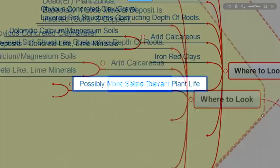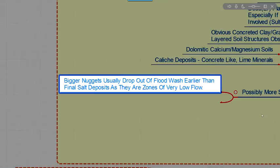Possibly more saline tolerant plant life. Bigger nuggets will usually drop out of a flood wash earlier than the final salt deposits. As I spoke of earlier. As they go down into the zones of lower and lower flow. Slower and slower flow.